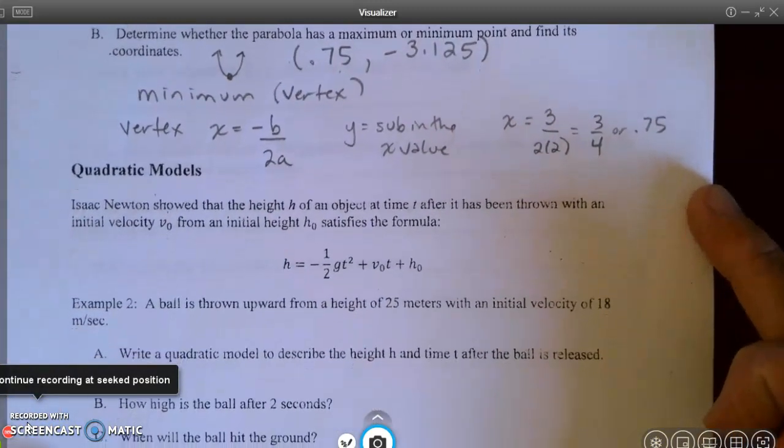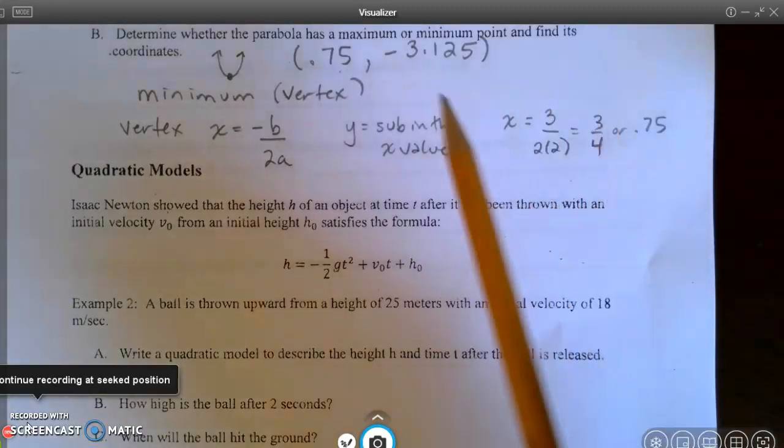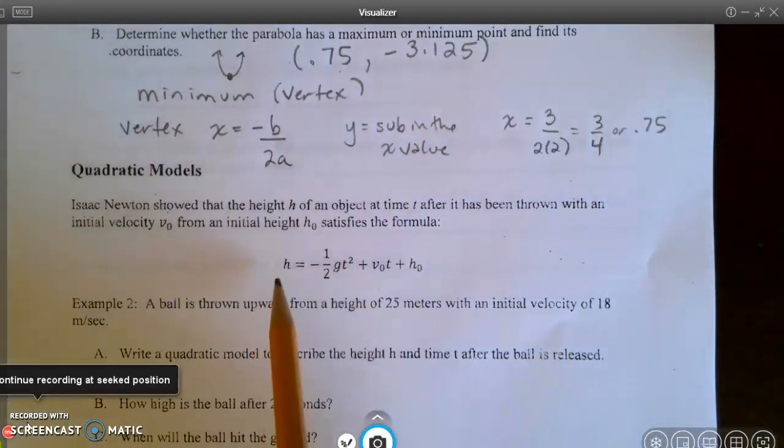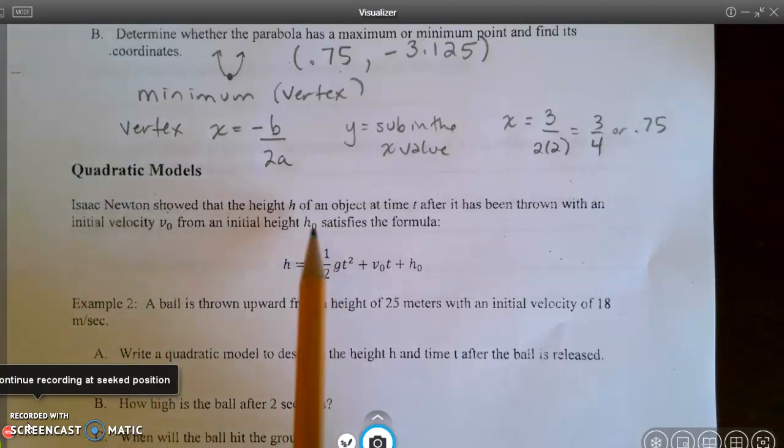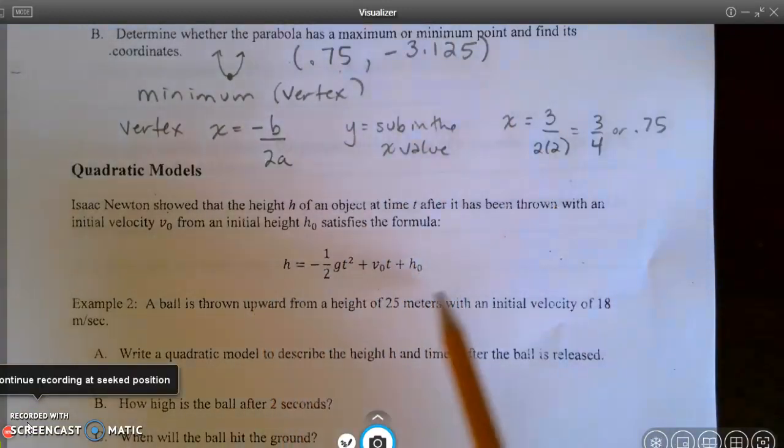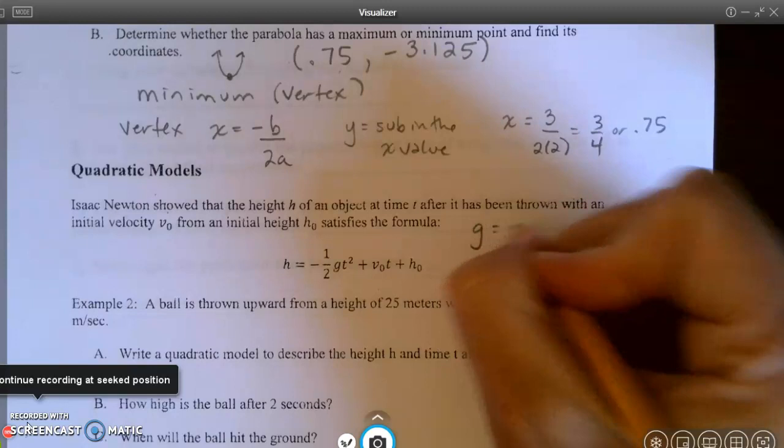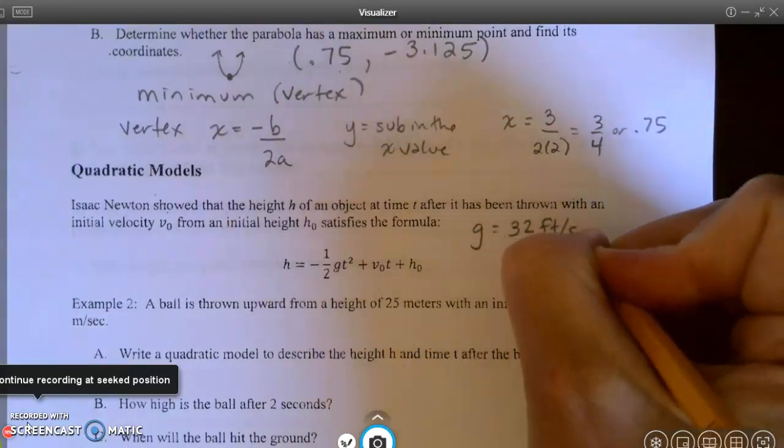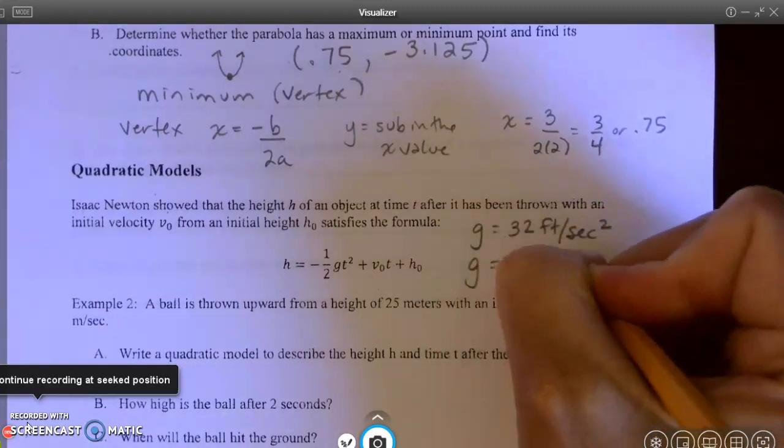Let's go down to learn a little bit more about quadratic models. Isaac Newton showed that the height of an object at time t after it has been thrown with an initial velocity v₀ from an initial height h₀ satisfies the following formula. A couple things I would like to point out. First of all, this is a formula you're going to be using a lot if you're taking physics. Anytime something is sub 0, that means it's the starting amount before any time has passed. G stands for gravity, and gravity is either going to be 32 feet per second squared, or it's going to be 9.8 meters per second squared.